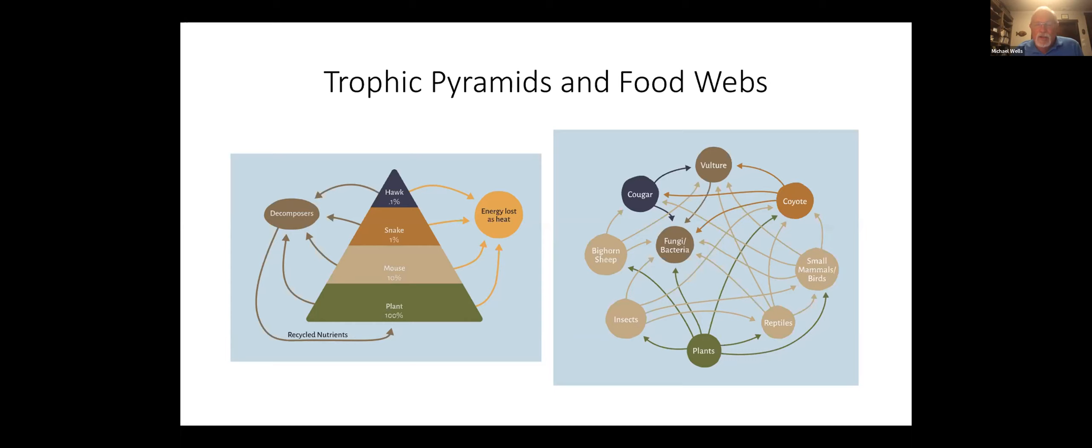But if you actually look at who eats who and who consumes who and who scavenges on who, the relationship isn't quite as nice and linear as a pyramid, but in fact sort of becomes a web. If you look at something, and unfortunately the coyote is off here to the right. But the coyote eats plants. Coyote eats reptiles. The coyote eats small mammals. And then in turn, the coyote is eventually scavenged by vultures and also decomposed by fungi and bacteria. It's a fairly complex relationship if you start looking at the relationship of how energy actually flows between different species in an ecosystem.